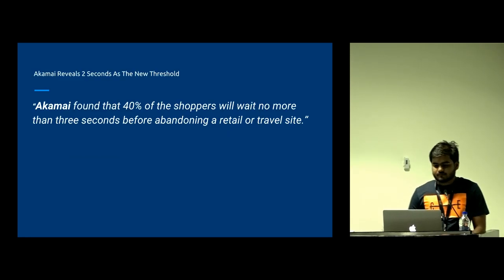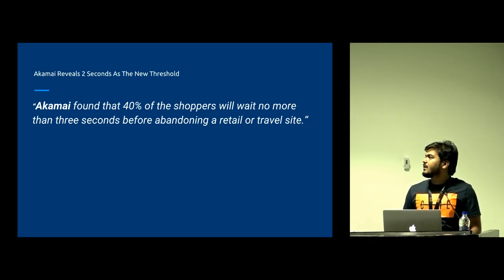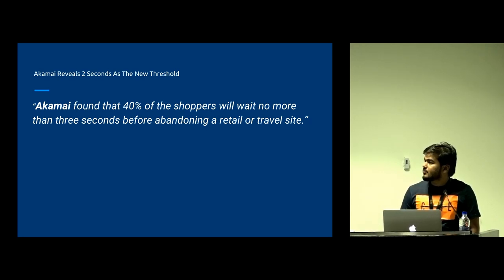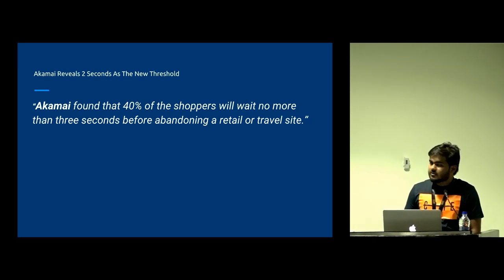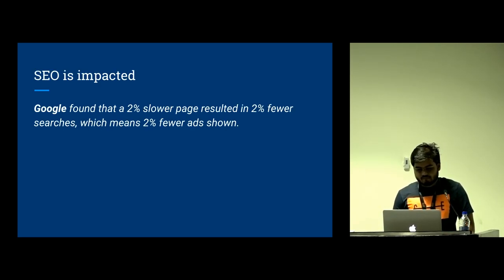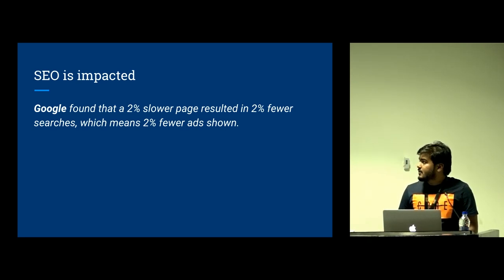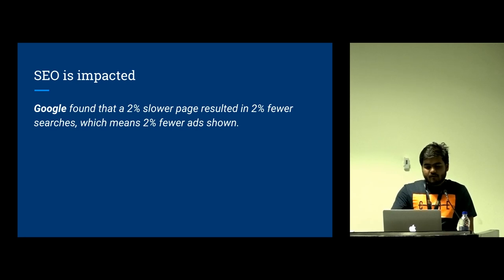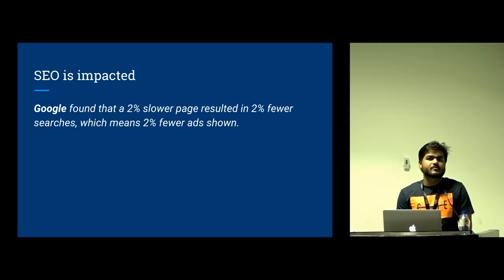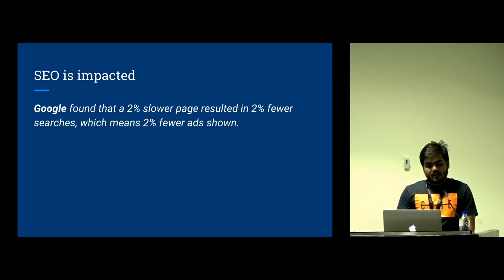These quotes are from the famous CDN Akamai, which revealed that if your website takes somewhere around two and a half to three seconds to load, 40% of shoppers will go to your competitor's website. That's true for all retail websites — if Flipkart takes two and a half seconds to load, people go to Amazon. SEO is also impacted: Google says that if a page is 2% slower, you will have 2% fewer search impressions, meaning fewer ads and direct revenue impact.